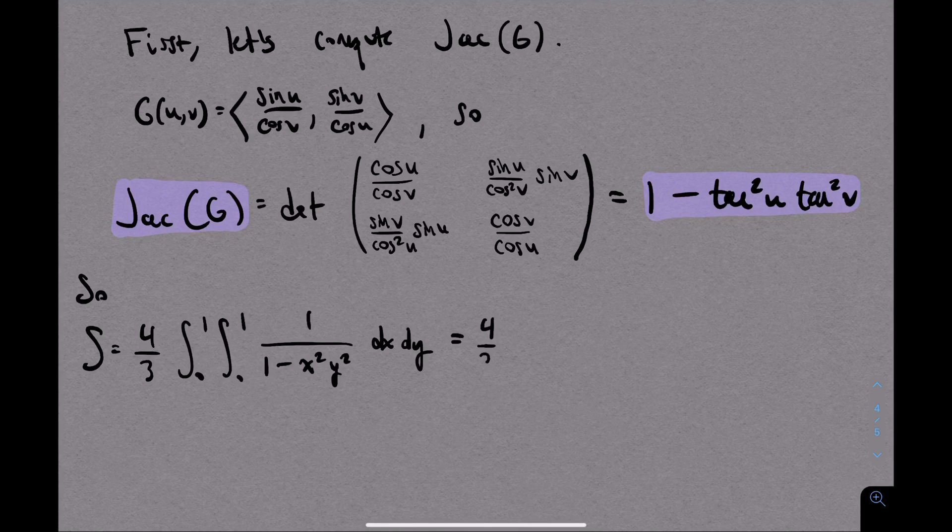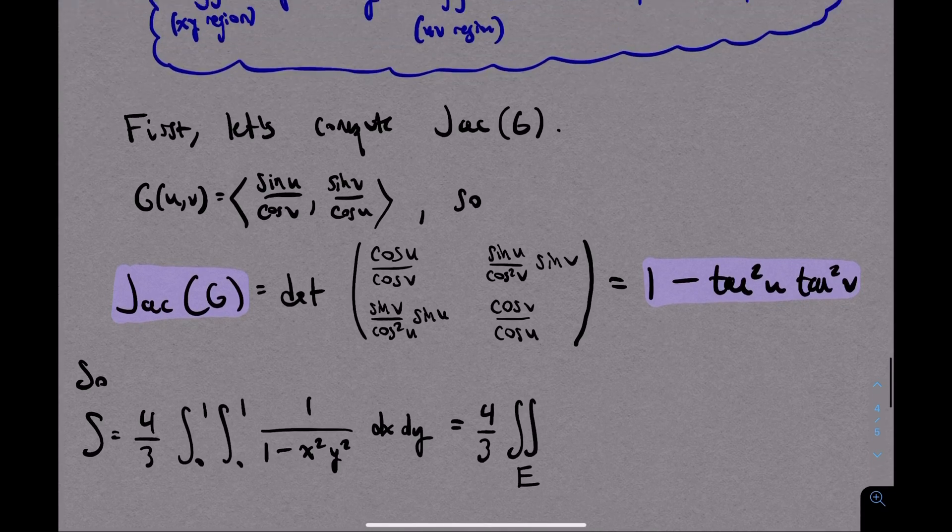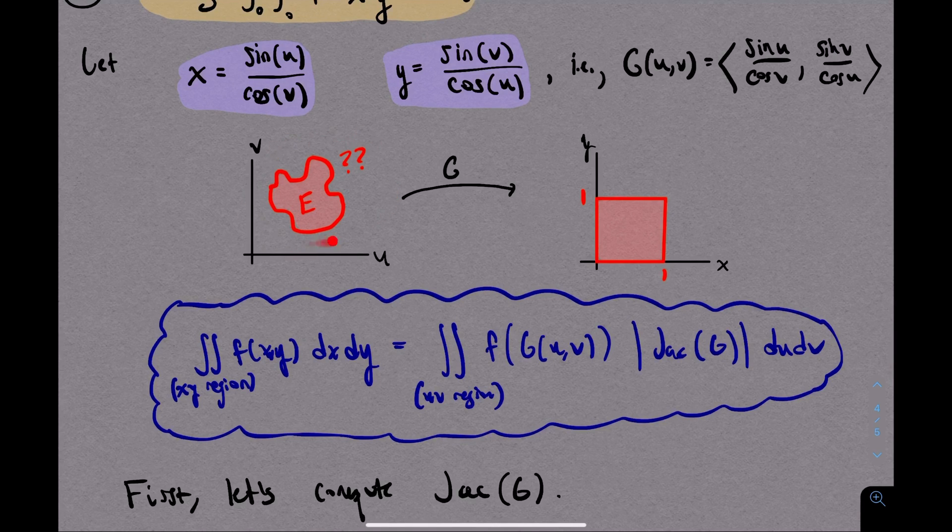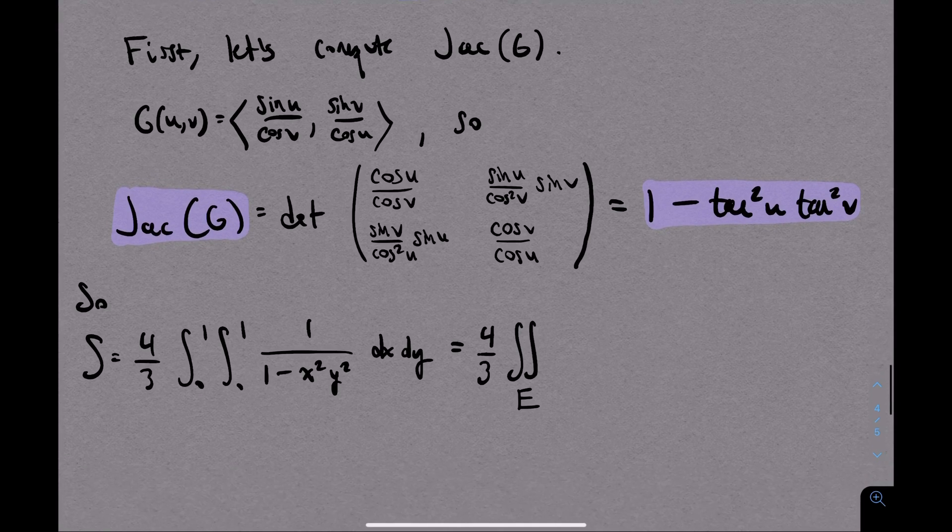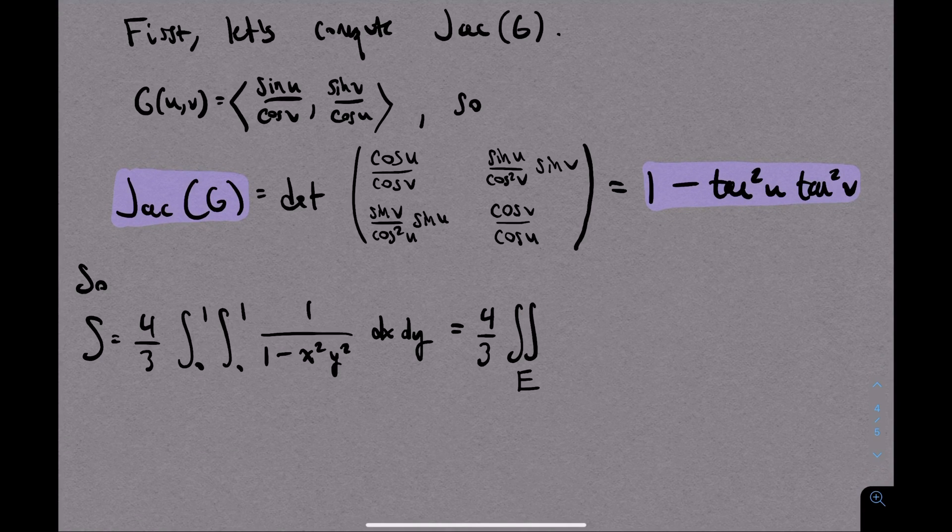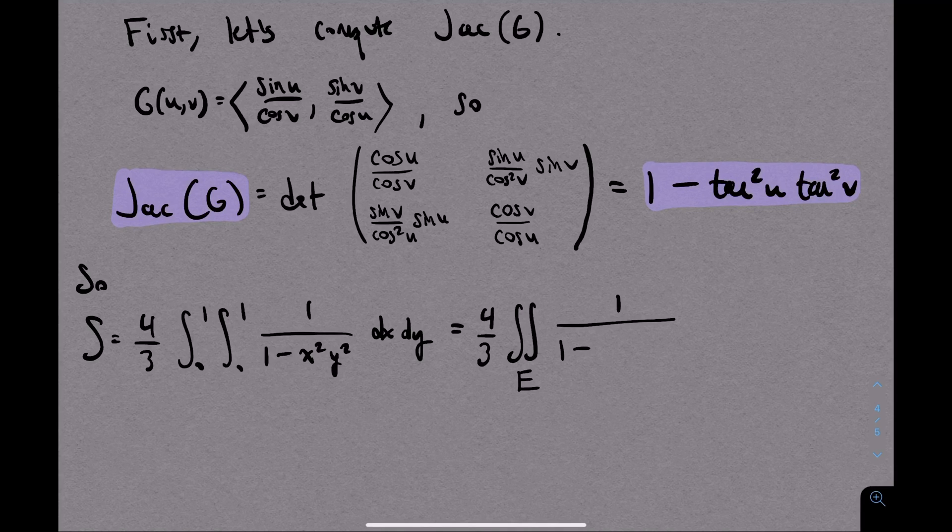Now again, we still don't know what e is, but let's change everything else first. This double integral that we're starting with is going to be 4 thirds times the double integral of whatever e is, times 1 over 1 minus. Now I'll do some more algebra in one step, but when I take x squared times y squared, we'll get a sine squared of u over cosine squared of u, which is tangent squared of u.